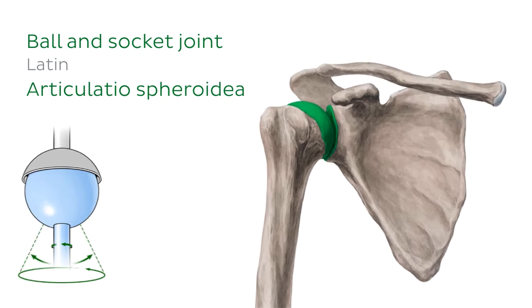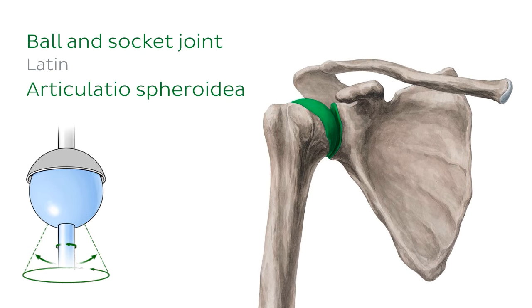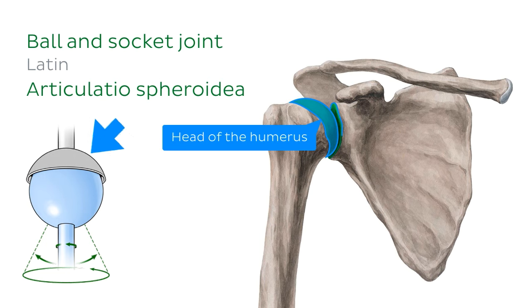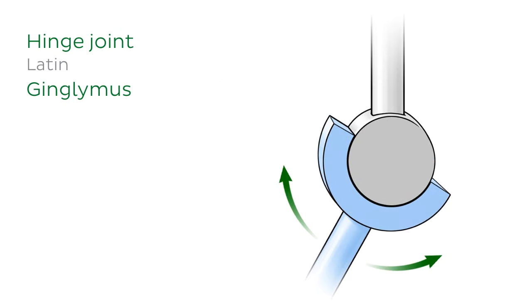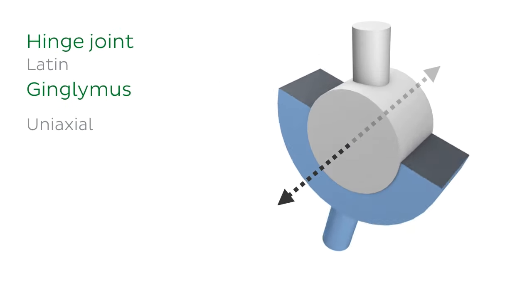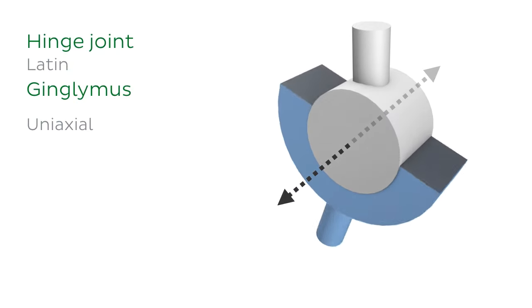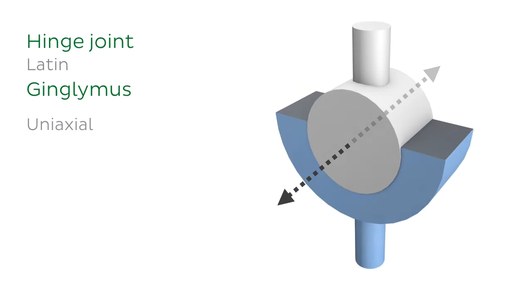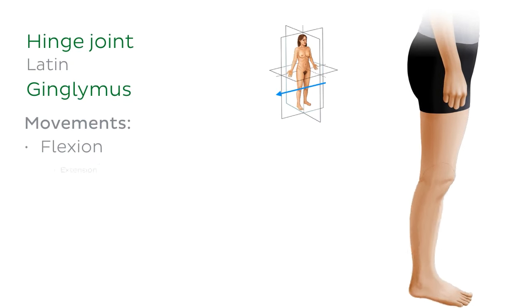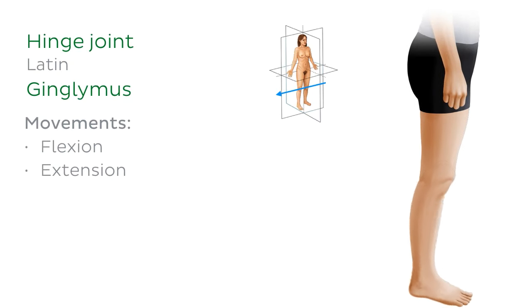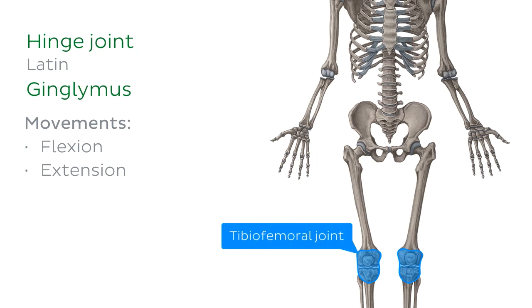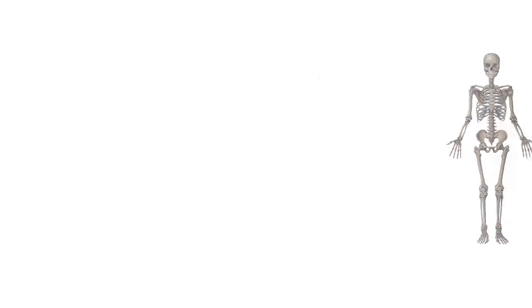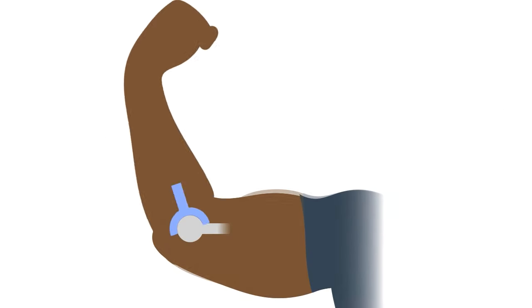Using the glenohumeral joint as a reference, we can see that this ball and socket joint has one ball-shaped articular surface — the head of the humerus — and one socket-like articular surface — the glenoid cavity. Next, we have the hinge joint, which has only one axis of motion, making it uniaxial. Hinge joints allow movement around the frontal axis, which passes transversely through the joint. Therefore, the movements that occur at this joint are flexion and extension. Two examples are the tibiofemoral joint, or knee joint, and the elbow joint. So we use our hinge joints when we flex our biceps.